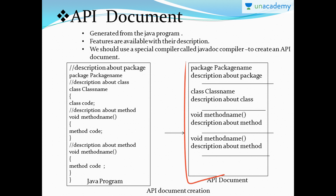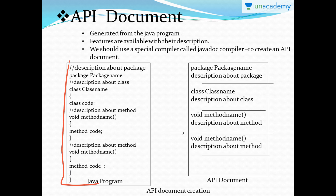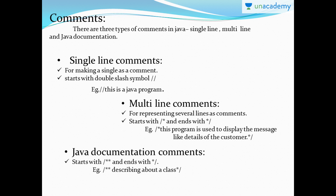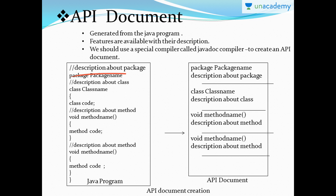The method description is also given as part of the API documents - what that method has to do and when to call it. This gives us the clear understanding that API documents are used for giving descriptions about each and everything we write in the Java program, whereas in the program we simply give the class name, package name, and write the program.